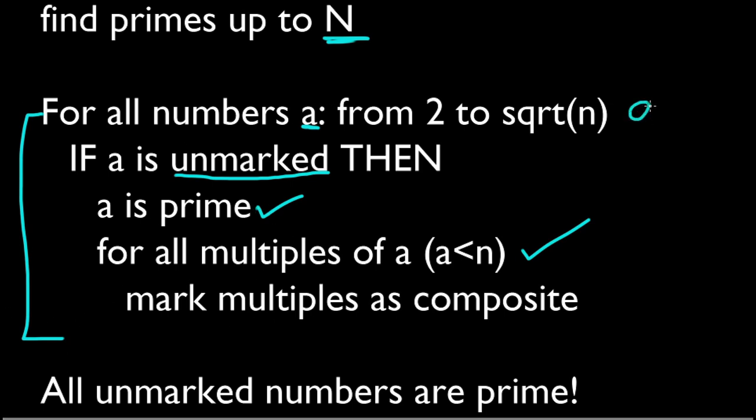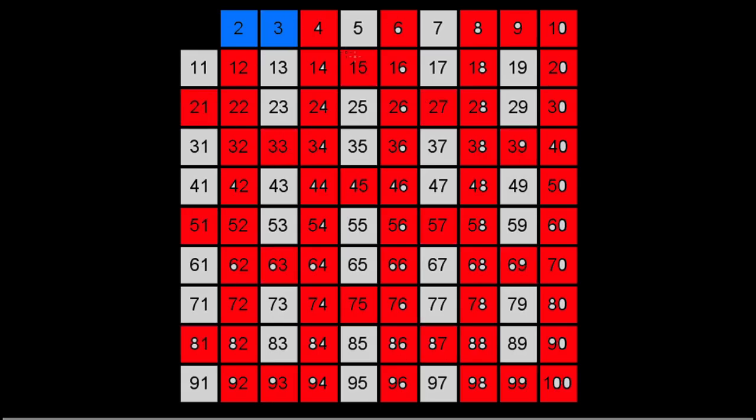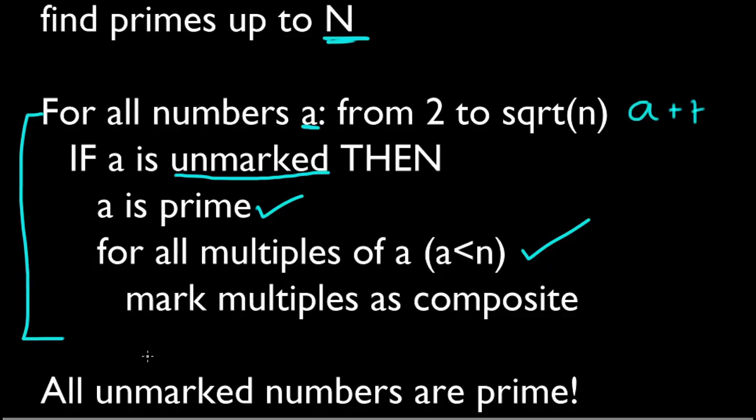So we're on 2, then we go to 3, then we go to 4, 5, and so on. And when we're done we have all primes. Notice here that this is also a loop, so we have a main loop for, and when we find a prime...